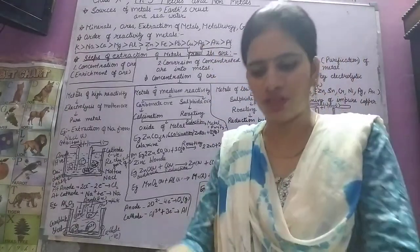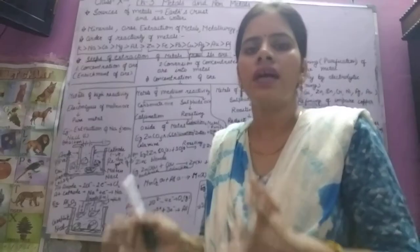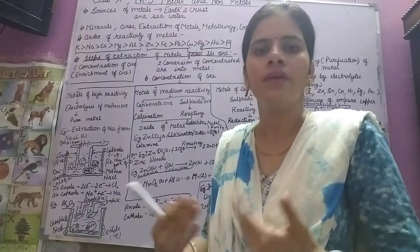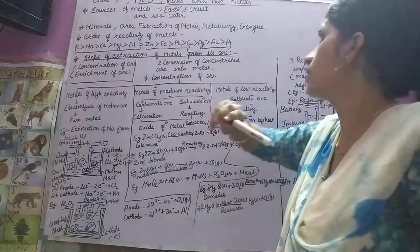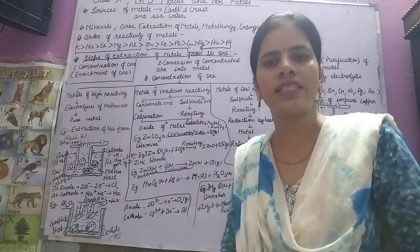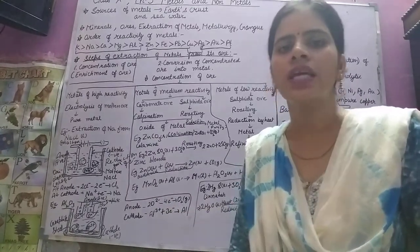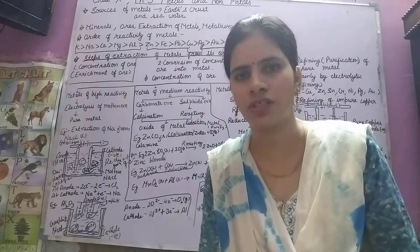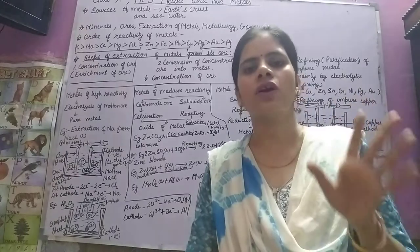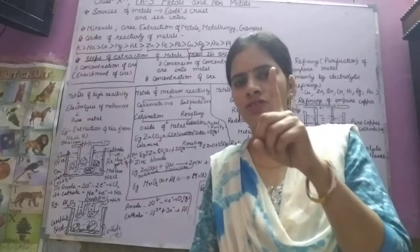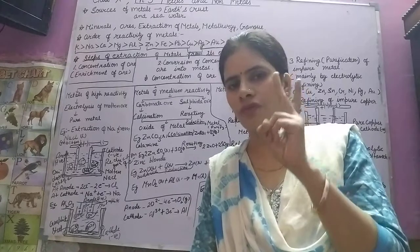Extraction of metals means the process of obtaining metals from their ores. Metallurgy is the process of extraction of metals from their ores and their purification. So first we extract the metal from the ore, and then we purify it.